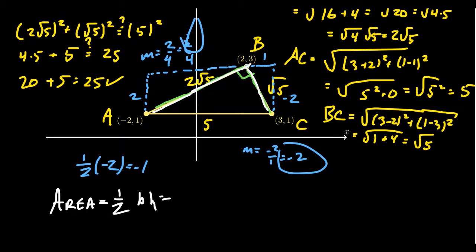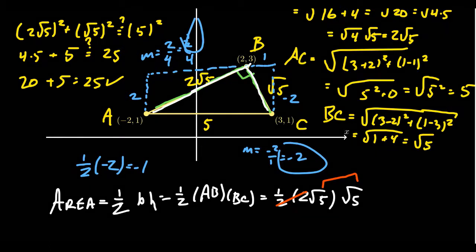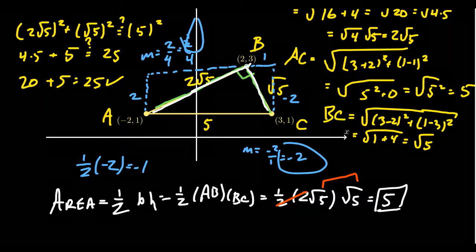So the area is going to be 1 half times the distance AB times the distance BC. Which we saw that AB turned out to be 2 root 5. And we saw that BC turned out to be the square root of 5. And so what happens is 1 half times 2 is equal to 1. And the square root of 5 times the square root of 5 turns out to be 5. So the area of this right triangle is 5.